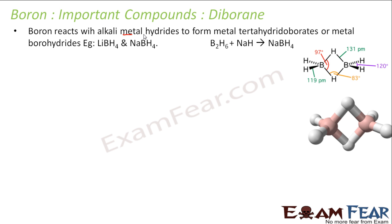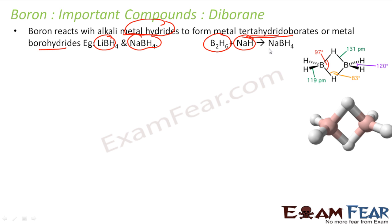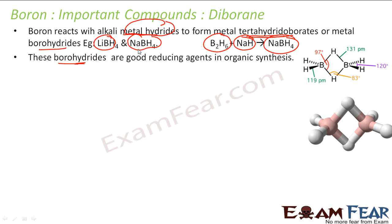Diborane reacts with alkali metal hydrides to form metal tetrahydroborates, also called metal borohydrides. For example, reacting diborane with sodium hydride gives NaBH4 — sodium borohydride, or sodium tetrahydroborate. These borohydrides are very good reducing agents in organic chemistry, which is why this reaction is important.